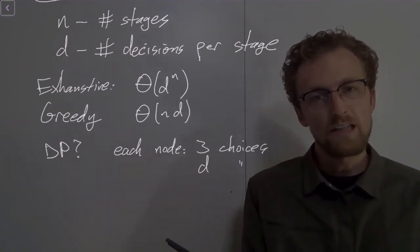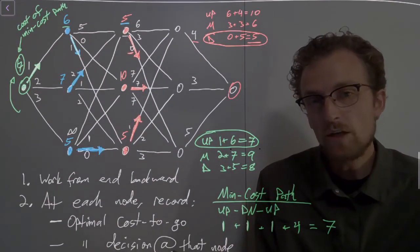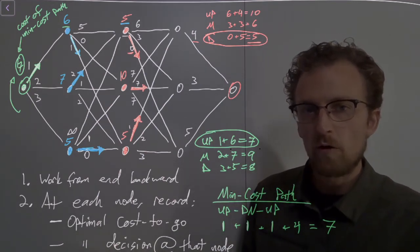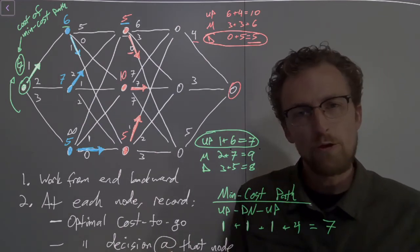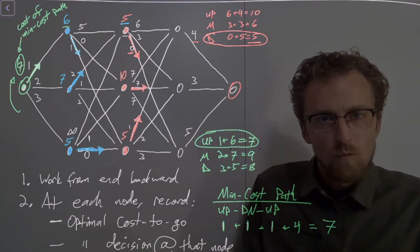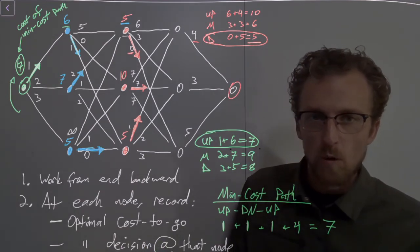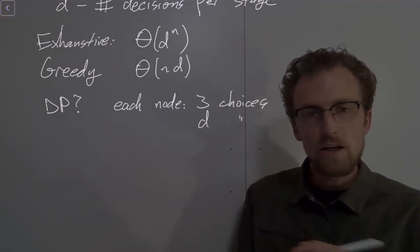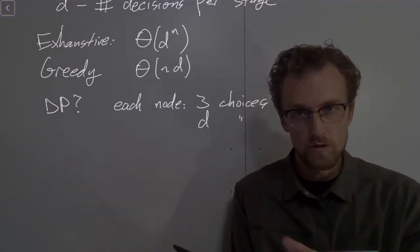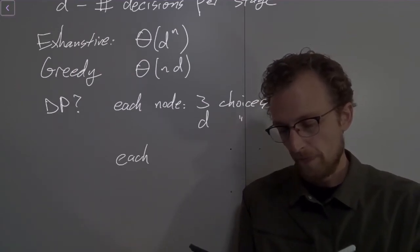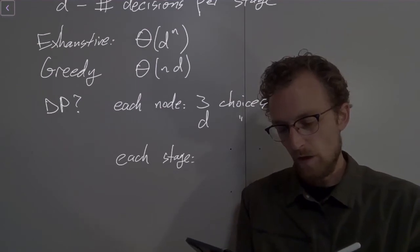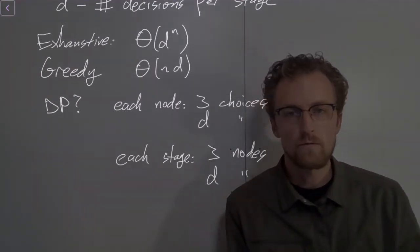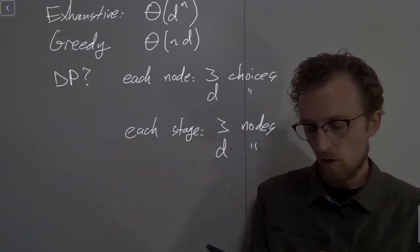Now how many nodes are there in each stage? Because we have to do this for every single node. Unlike the greedy algorithm that just ignores whatever node it doesn't come to, the DP algorithm actually does have to look at every single node. We have three nodes in each stage. Why? Because each one of those nodes corresponds to one of the possible decisions we could have made in the previous stage. So just like we have d choices at each node, we also have d nodes in each stage. In other words, we have d nodes if we're going along with this in a generic way. And then in total, we have n stages.